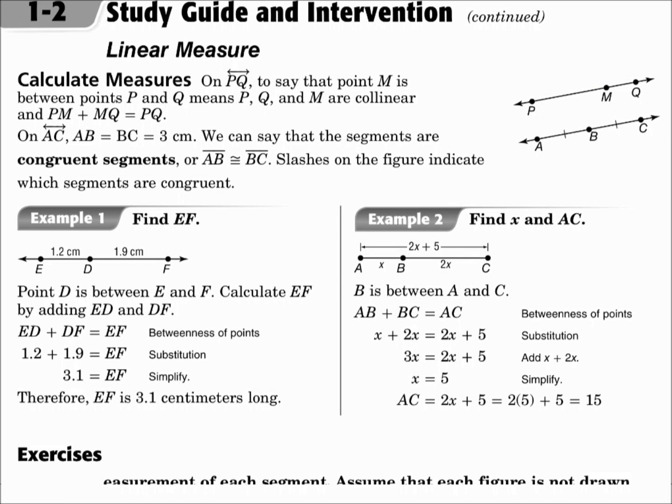On line AC, AB equals BC, which equals 3 centimeters. We can say the segments are congruent segments, or segment AB is congruent to segment BC. Slashes on the figure indicate which segments are congruent. Notice the two slashes that say that those two segment parts are congruent.